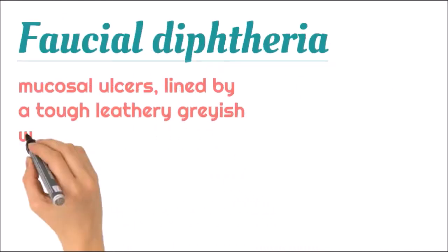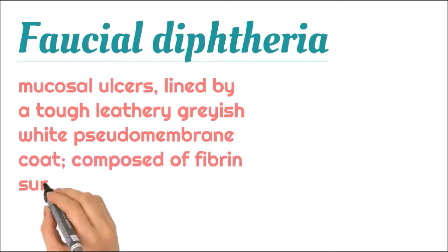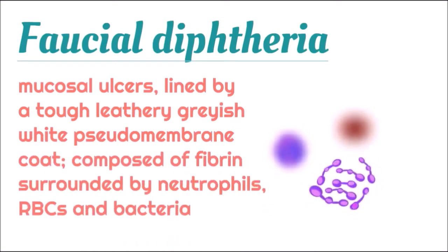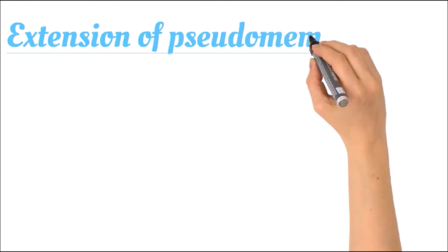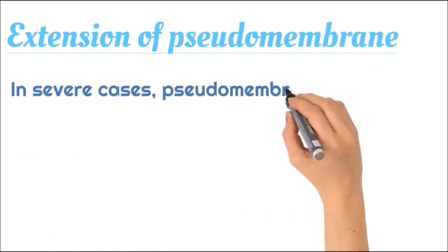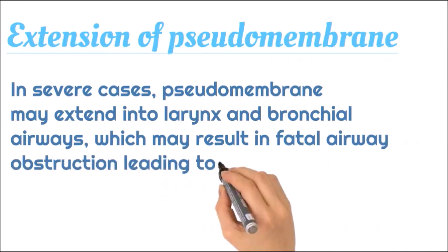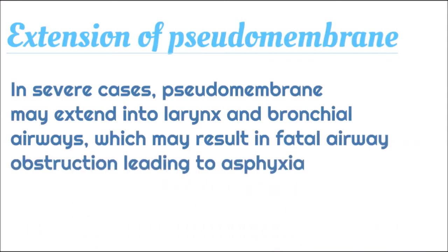Pharyngeal diphtheria is characterized by mucosal ulcers lined by a tough leathery grayish-white pseudomembrane composed of fibrin, surrounded by neutrophils, RBCs, and bacteria. Extension of the pseudomembrane can occur in severe cases, extending into the larynx and bronchial airways, causing asphyxia due to airway obstruction.